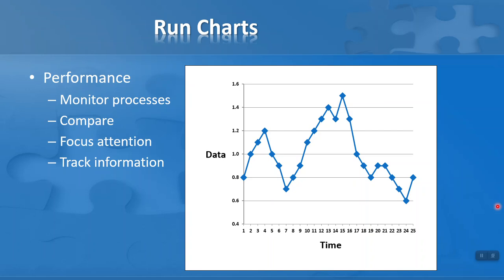We do this because we want to monitor processes for quality, mostly for quality control. We want to compare data over a period of time, focus attention on areas where things are going well and when things go wrong. A simple diagram like this can tell us a lot about what's happening over time.